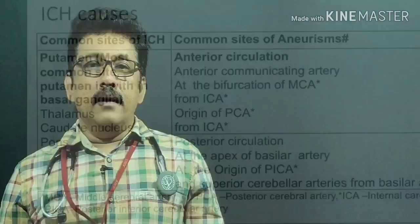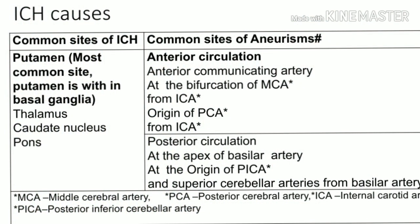For intracerebral hemorrhage, the most common site is the putamen, located within the basal ganglia. Other sites include the thalamus, caudate nucleus, and pons. For aneurysm bleeds in the anterior circulation, common sites are the anterior communicating artery, bifurcation of the MCA, and origin of the ICA or PCA. In the posterior circulation, aneurysms are common at the apex of the basilar artery and at the origins of PICA and superior cerebellar arteries.